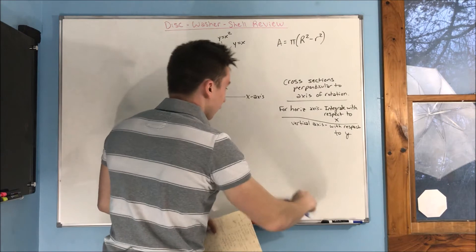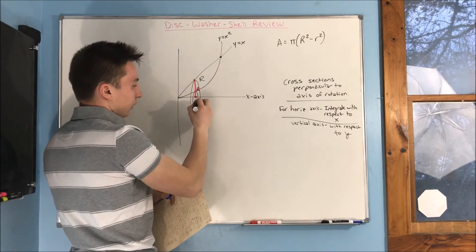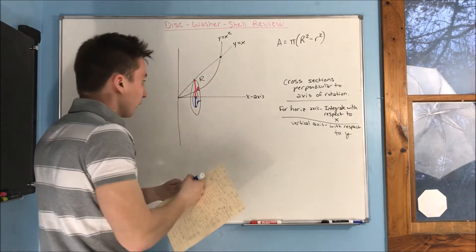And your little r is the inner radius, right? It's from the inner point to your center. So that's R.